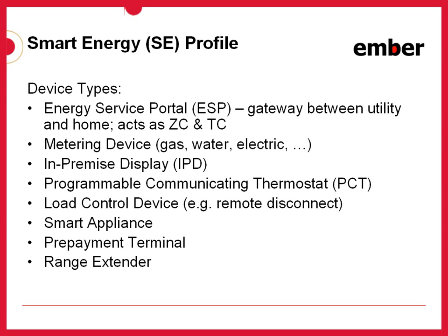There is a programmable thermostat that allows HVAC set points to respond to energy needs from the utility. There is a load control device — any device that responds to load control events from the utility, such as a remote disconnect or smart plug. Smart appliances are appliances that respond to load control and demand response messages — like a smart washing machine or smart refrigerator — reducing or changing their usage profile according to utility scarcity or pricing. Finally, there is a prepayment terminal and a range extender, which, similar to the HA profile, provides only message-relaying functionality.